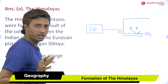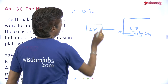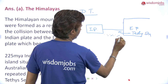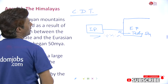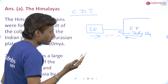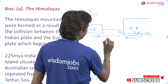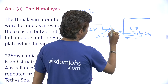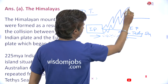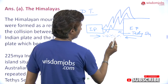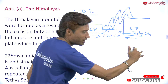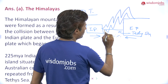As per the continental drift theory — I am also making a video on this — the Tethys Sea had sediments deposited at its base. The Indian plate collided with the Eurasian plate, and by Newton's third law, every action has an equal and opposite reaction. This pressure caused the sediments deposited at the base of the Tethys Sea to continuously rise, leading to the formation of the Himalayas.